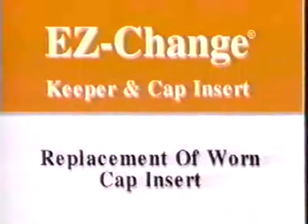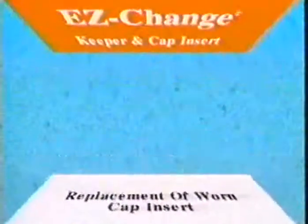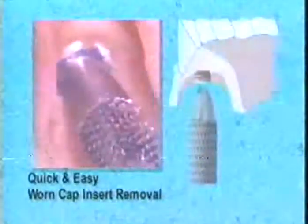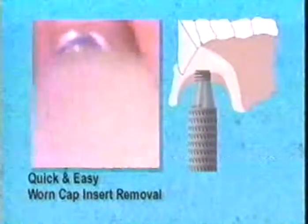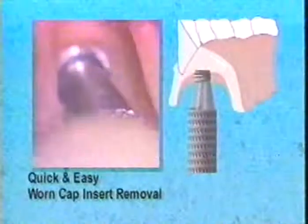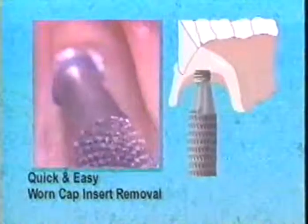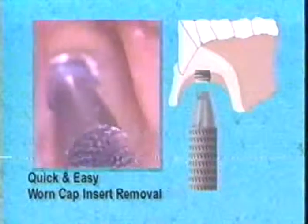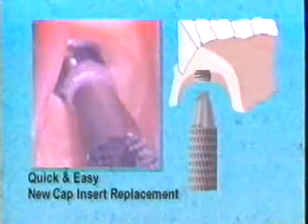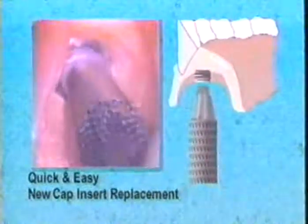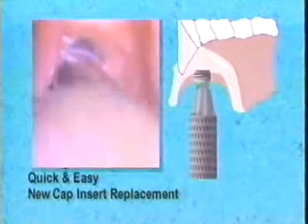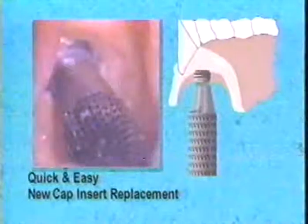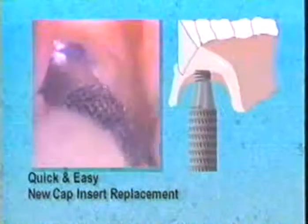Replacement of worn cap insert: The Easy Change cap insert may be replaced by inserting the two-pronged Easy Change Wrench into the worn cap insert and unthreading it. Replace by threading in a new cap insert. This procedure is completed in seconds.